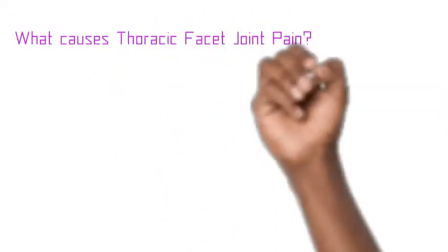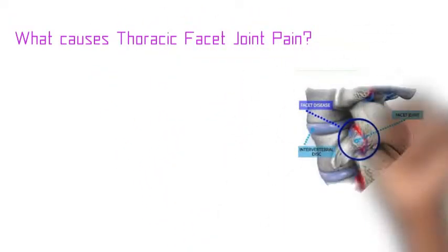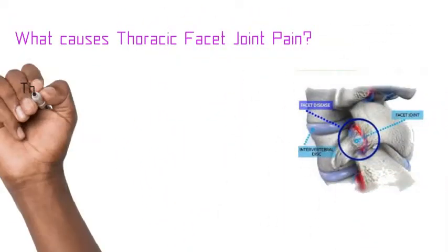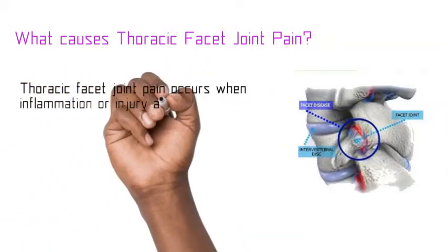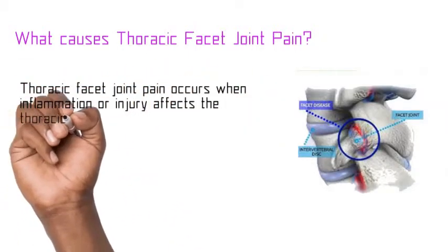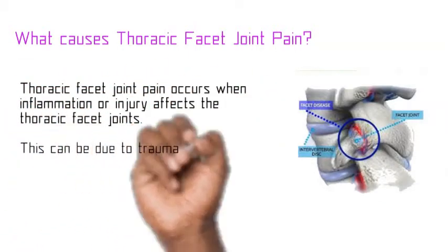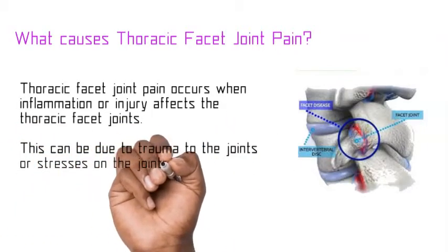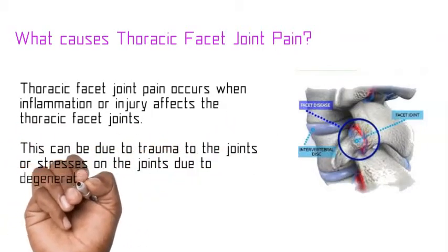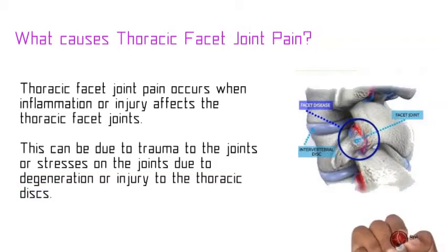What causes thoracic facet joint pain? Thoracic facet joint pain occurs when inflammation or injury affects the thoracic facet joints. This can be due to trauma to the joints or stresses on the joints due to degeneration or injury to the thoracic discs.